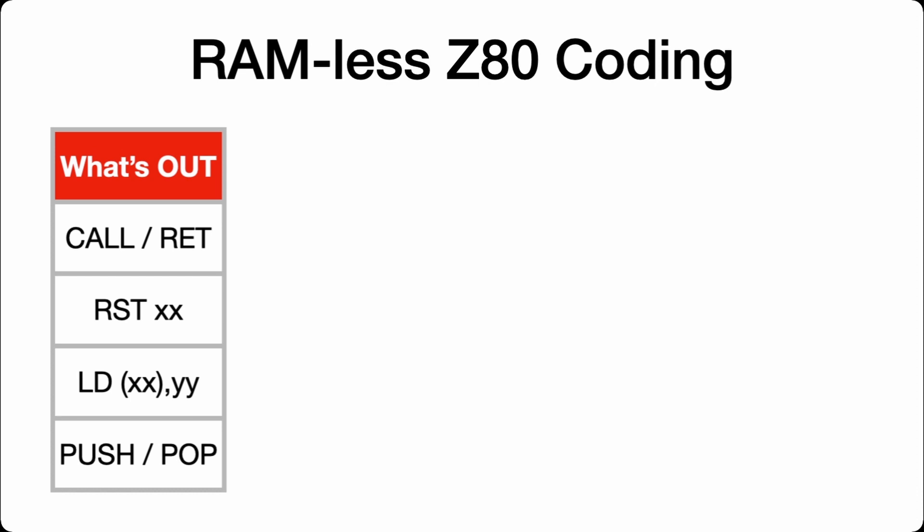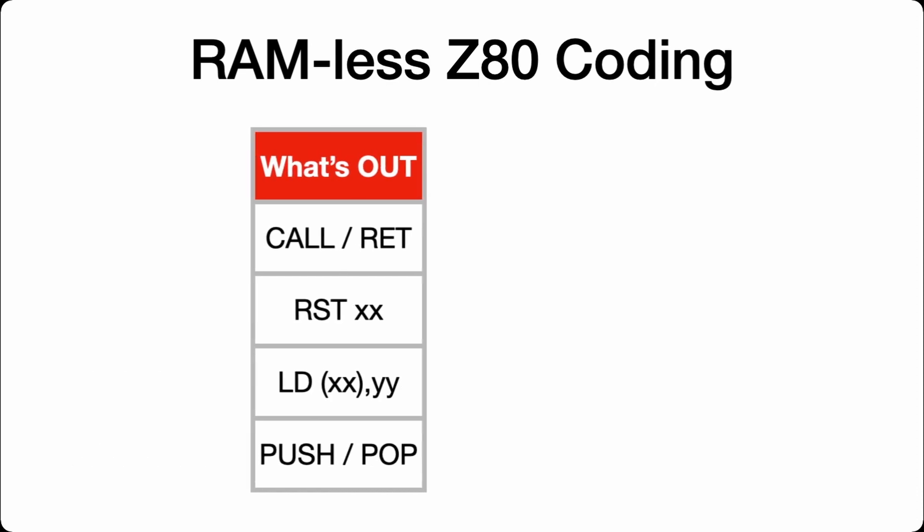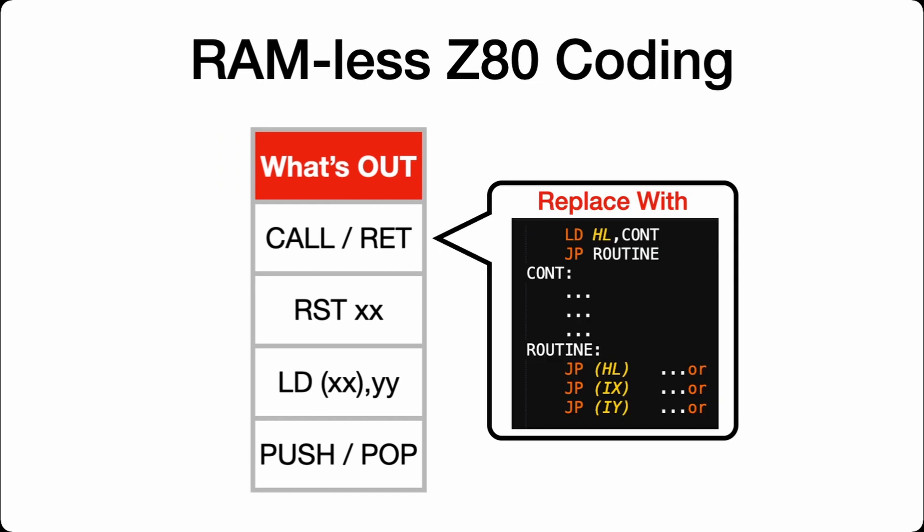If these operators are out, how do we replace them? CALL and RETURN essentially just jump using the stack, but we can just use the jump routines. If I save the next line of the call routine in HL, IX, or IY, and then when I want to return I use a JUMP bracket HL, IX, or IY — that will jump to the location stored in HL. RESTART is effectively the same.